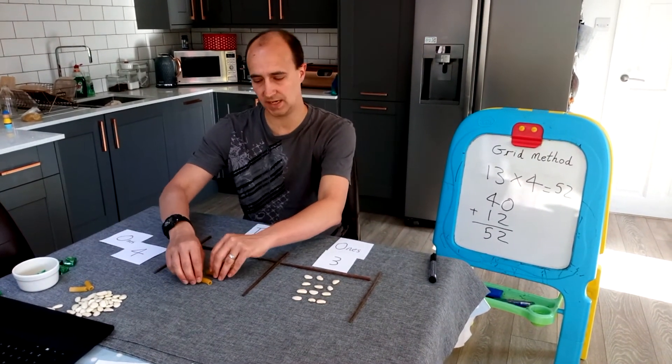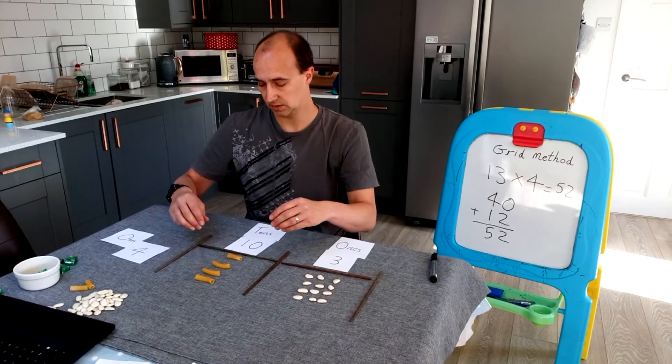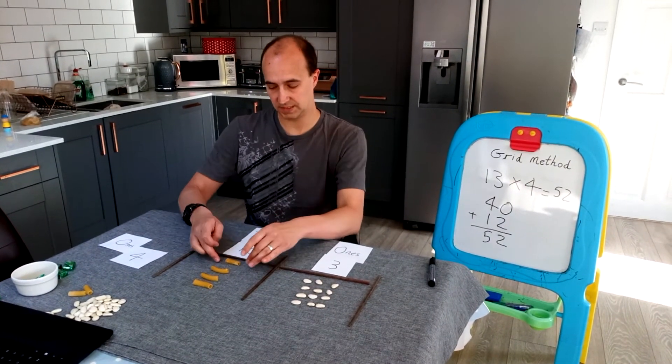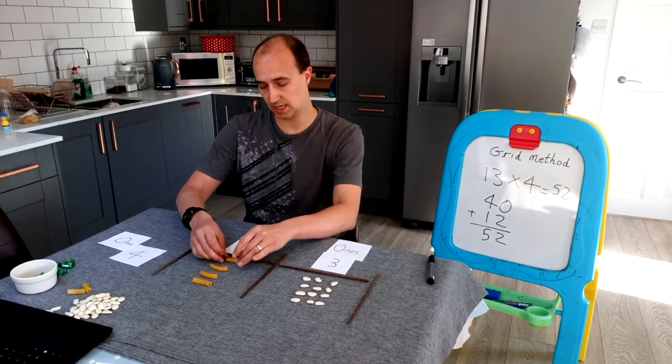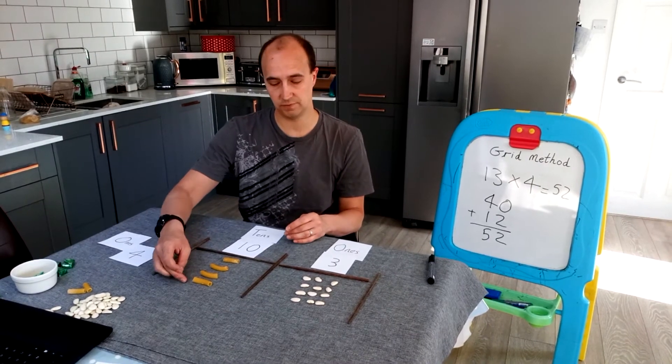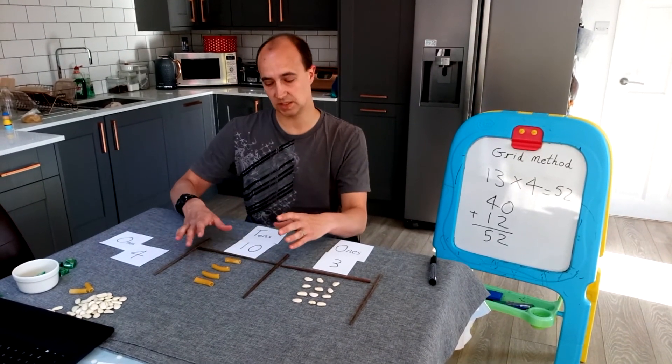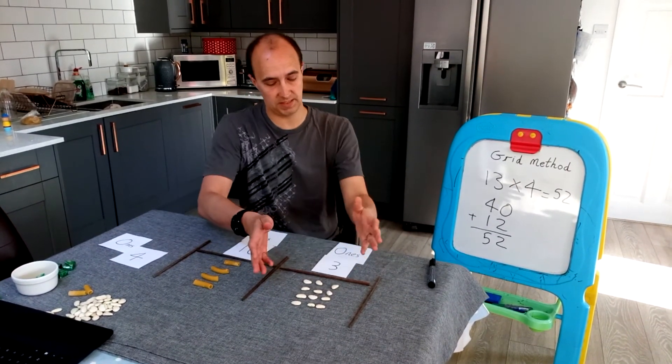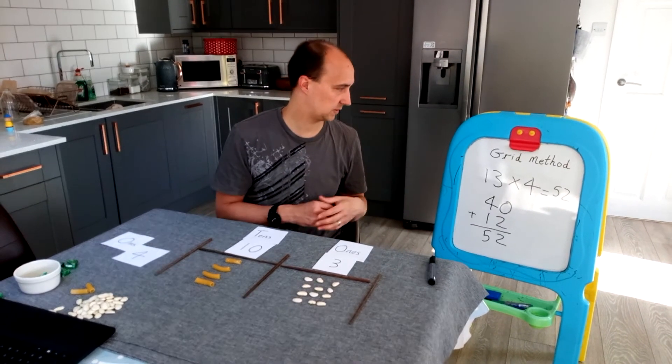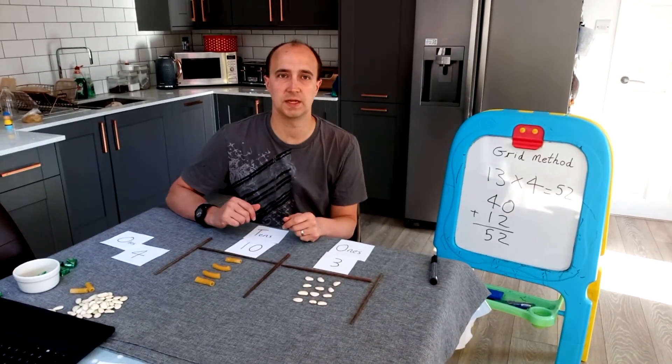So here we go. I'm using the pasta now. And I've got 4 lots of 10. Each bit of pasta is worth 10. So we've got 10, 20, 30, 40. It's just a lot easier to start counting in this way. And then the beans are my 1s. So it's the same method, but just in a different form slightly.